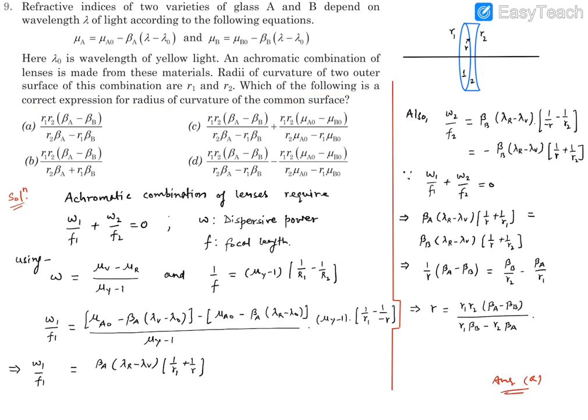Now for achromatic combination, we take one convex lens and another concave lens. And this is the common surface. So this common surface has a radius of curvature, let's say small r. These outer surface radius of curvature R1, R2 are known to us or given to us. We need to find out this R. Let's say this is of A material, this is of B material.